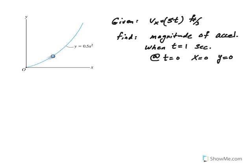So here we have this particle that is traveling along a curved path whose profile is defined by this parabola y equals 0.5x squared.